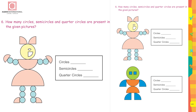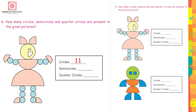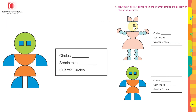How many circles, semicircles, and quarter circles are present in the given picture? Let's do the first one together — circles. Count the round faces: 1, 2, 3, 4, 5, 6, 7, 8, 9, 10, 11 — eleven circles. How many semicircles? 1, 2, 3, 4 — four semicircles. How many quarter circles? 1, 2, 3, 4, 5 — five quarter circles. Now do the next picture on your own.